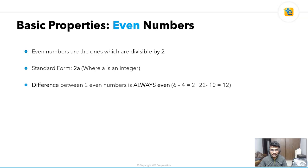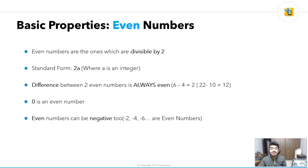Another example: 22 minus 10 equals 12, confirming the difference between two even numbers is always even. Zero is an even number — a lot of people think zero is neither even nor odd, but the GMAT tests this frequently, so remember: zero is even. Also, even numbers can be negative. Minus 2, minus 4, minus 6, minus 12 — all negative numbers divisible by two are also even numbers.